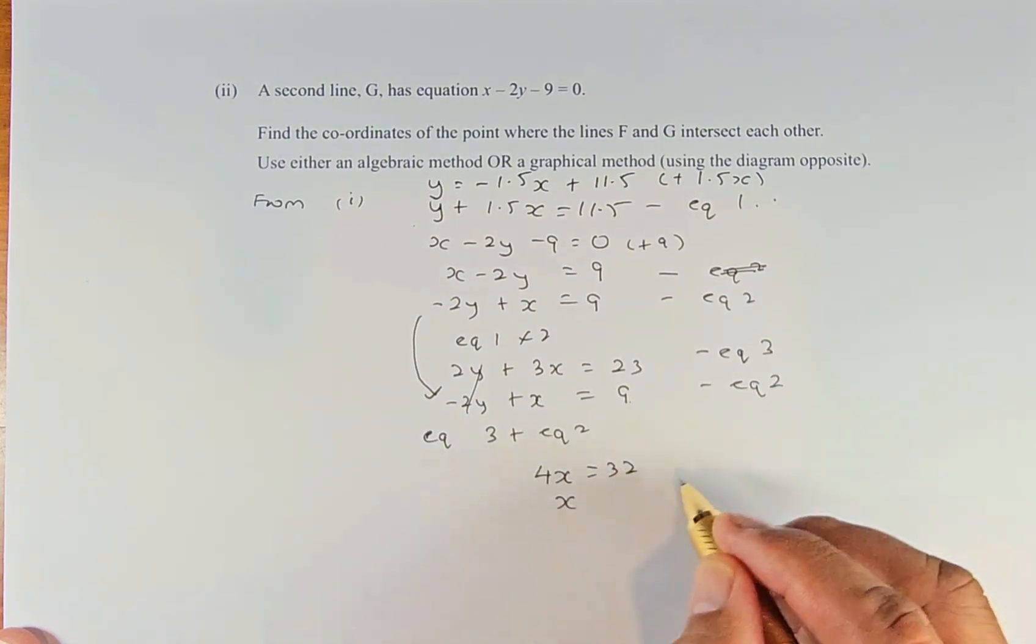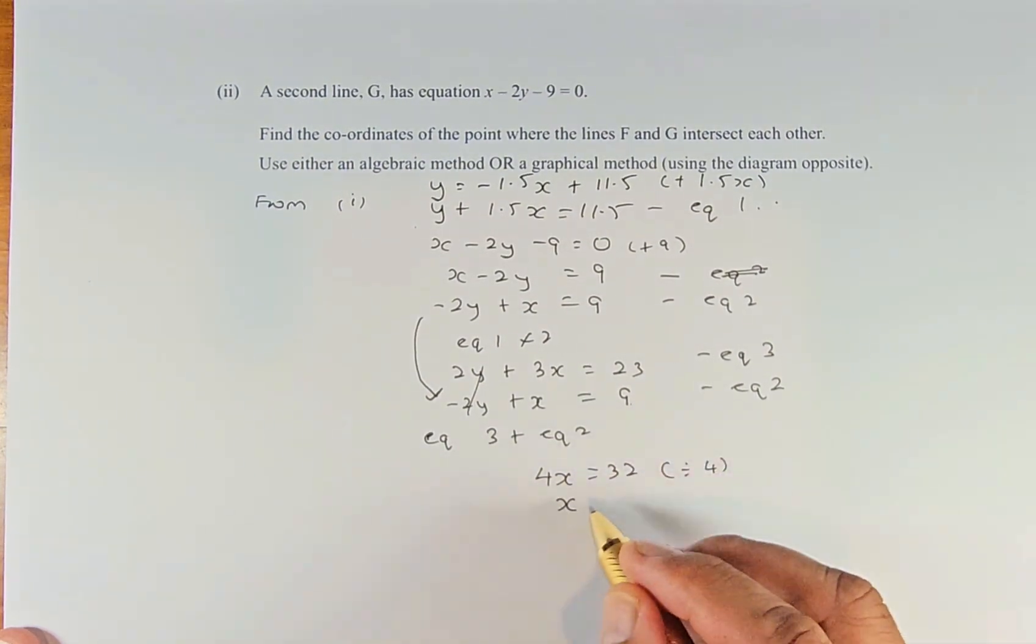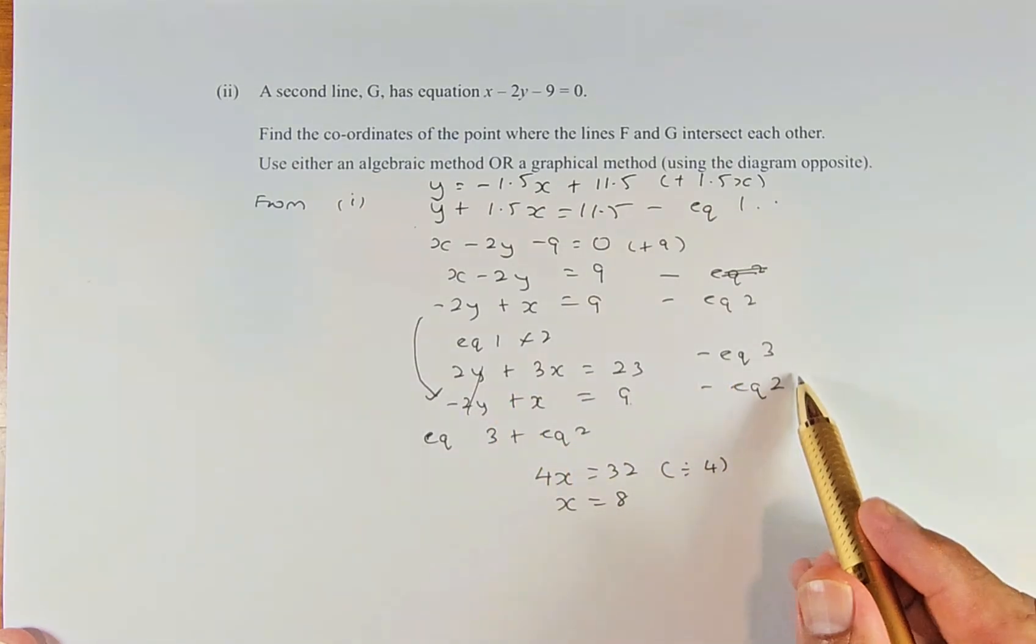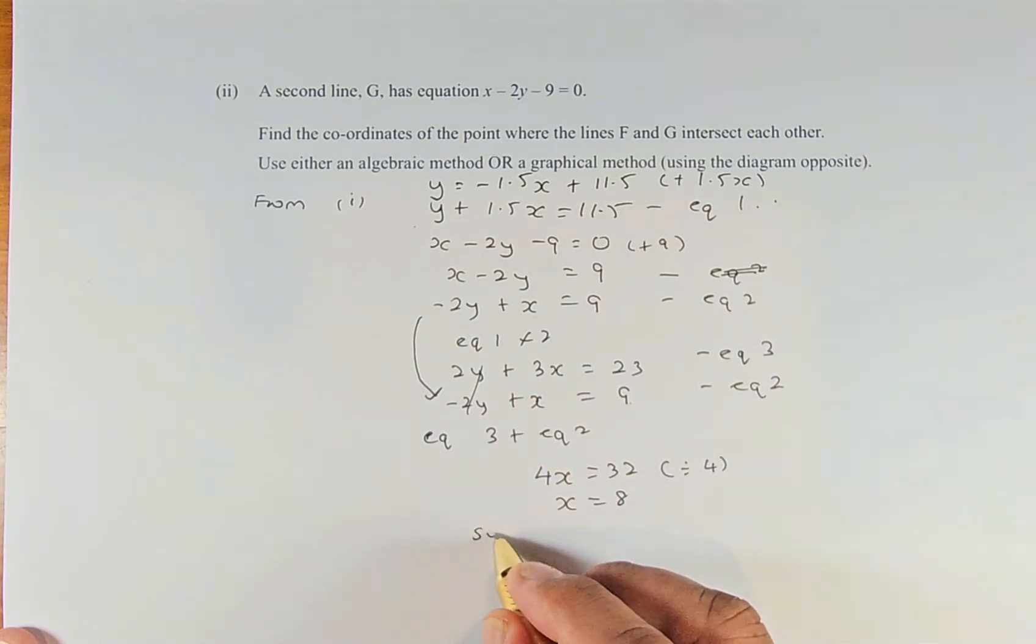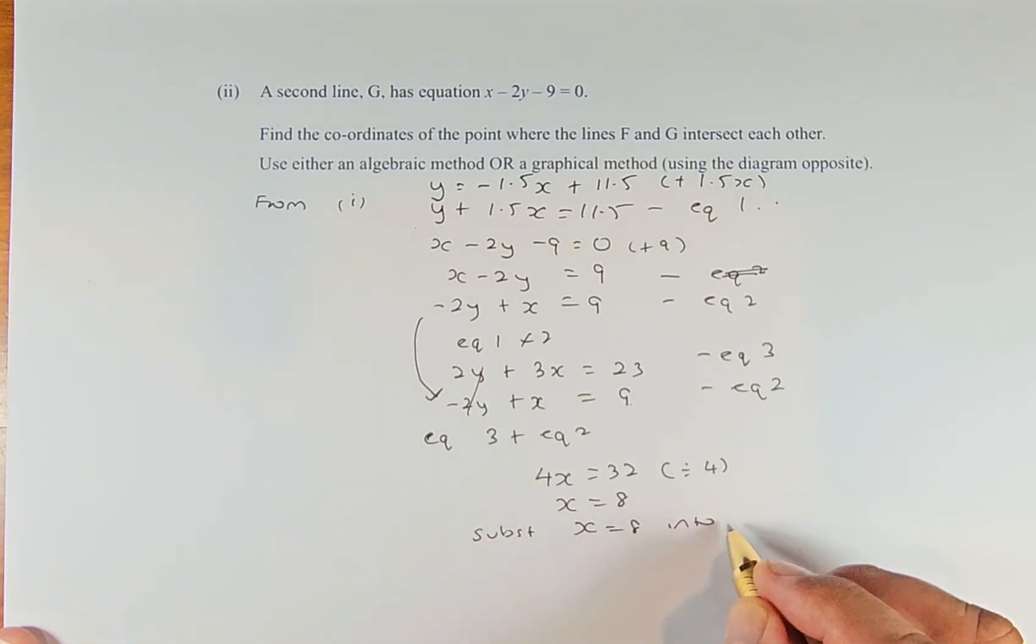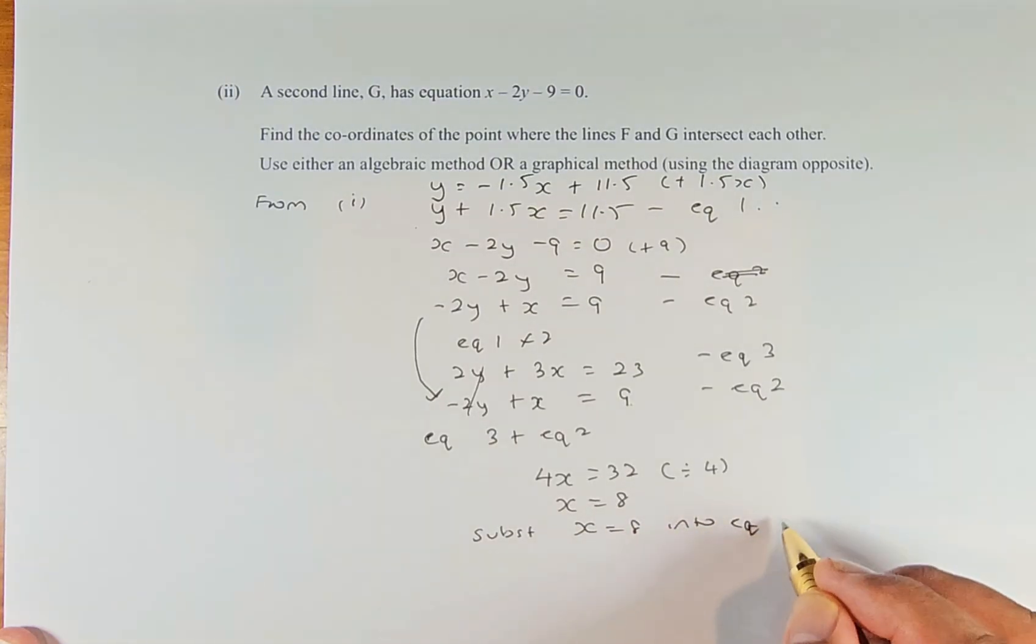To get x, we divide by 4 on both sides, so x = 8. Once we find x, we must find y. We can substitute back into equation 2 or 3. I suggest equation 3 because it's easier. So substitute x = 8 into equation 3.